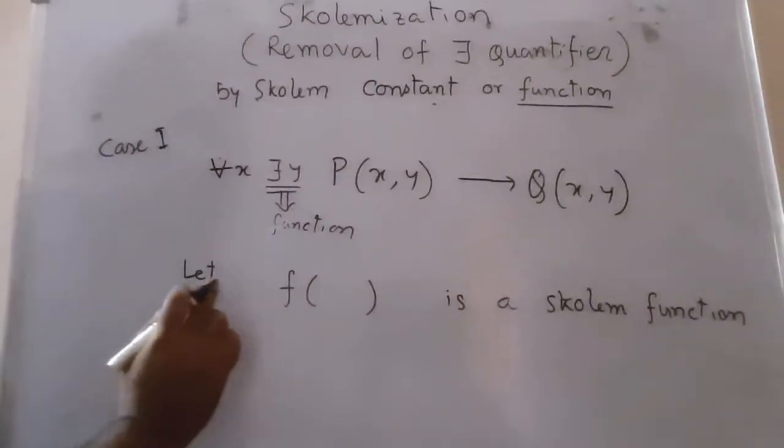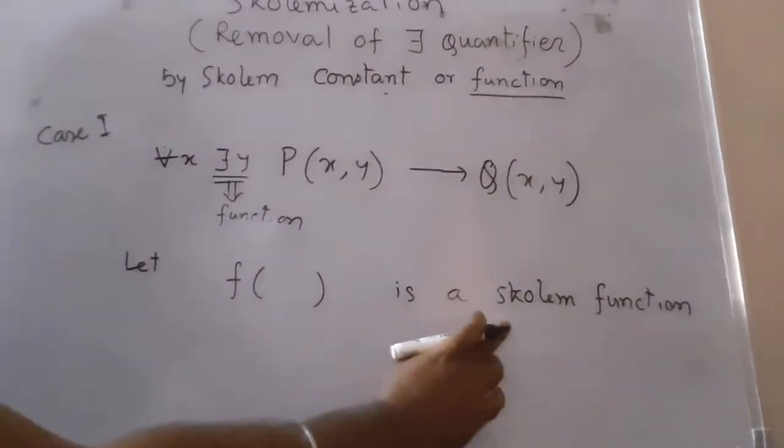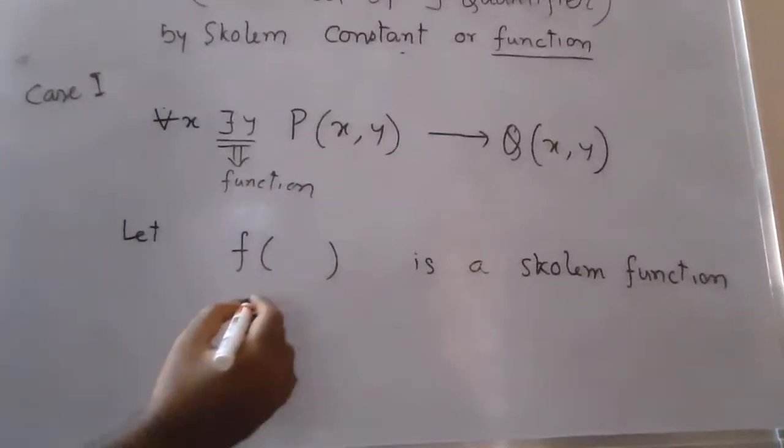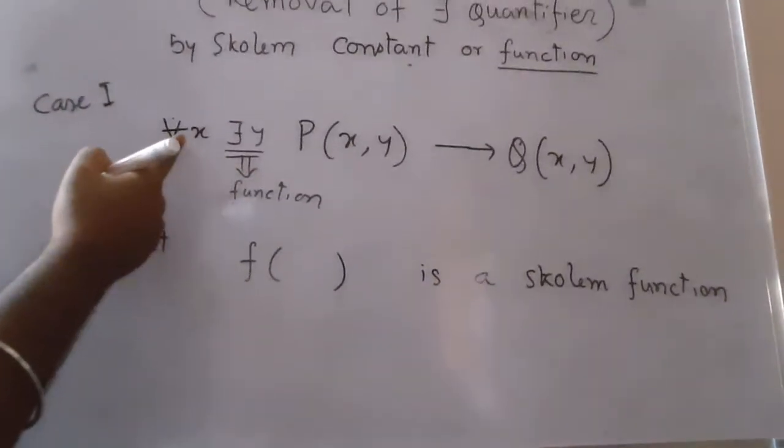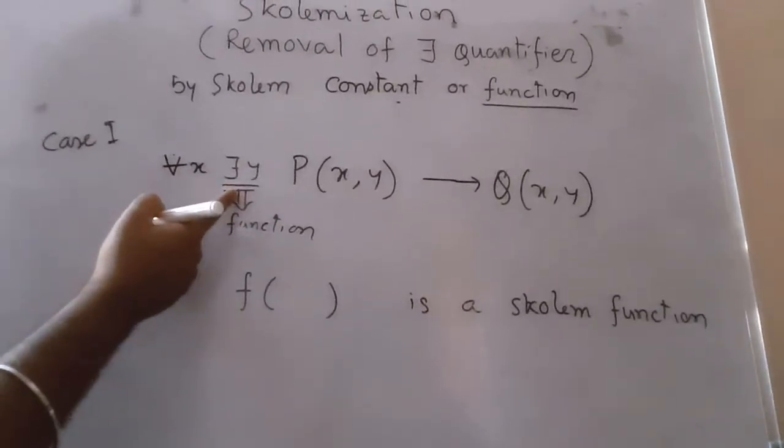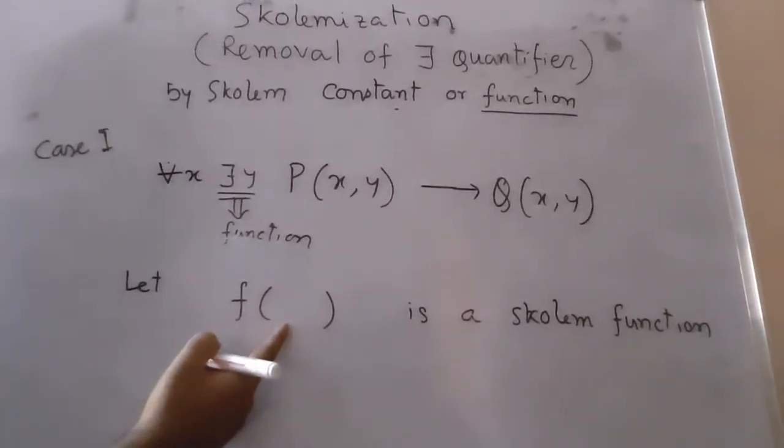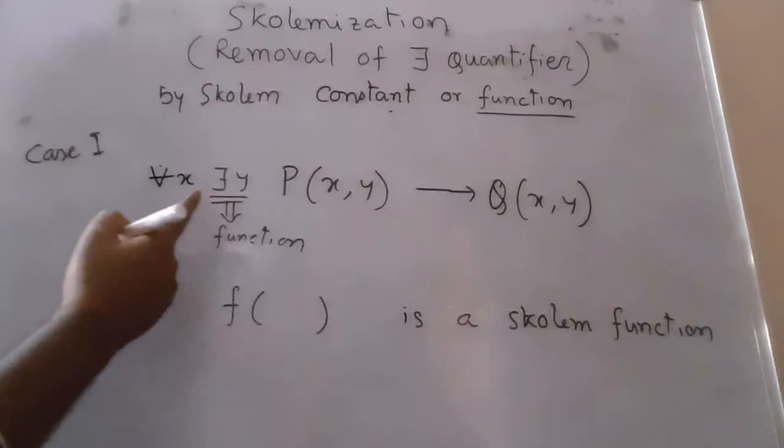Let f be the Skolem function. What will be the argument? All the variables from universal quantifiers that precede the existential quantifier will be the argument of that function. In this case, there is only one variable, for all x, so the argument will be x.